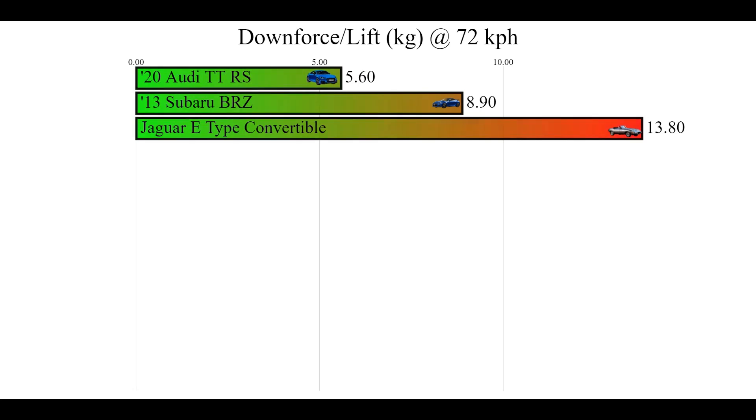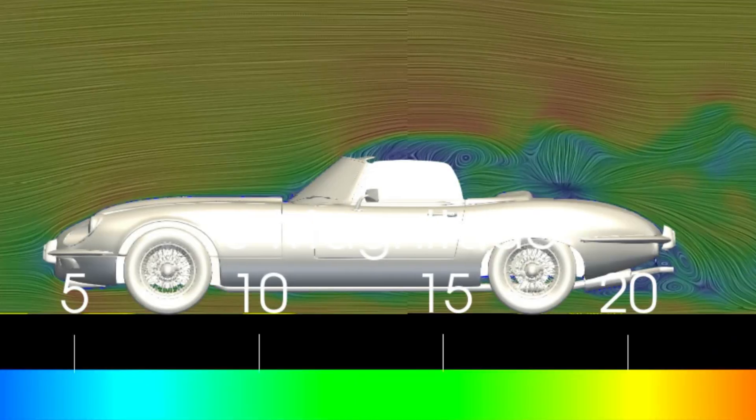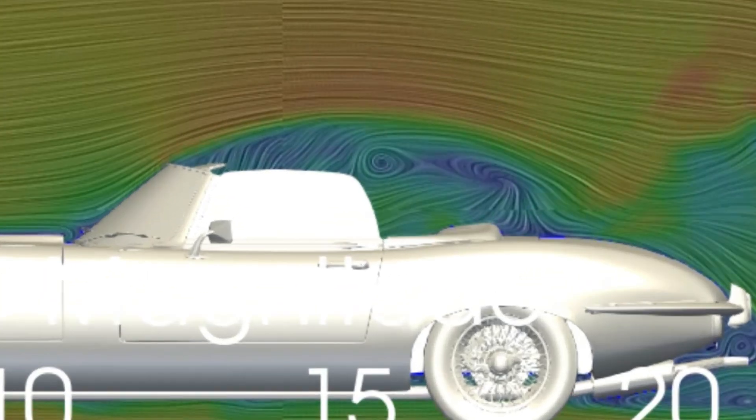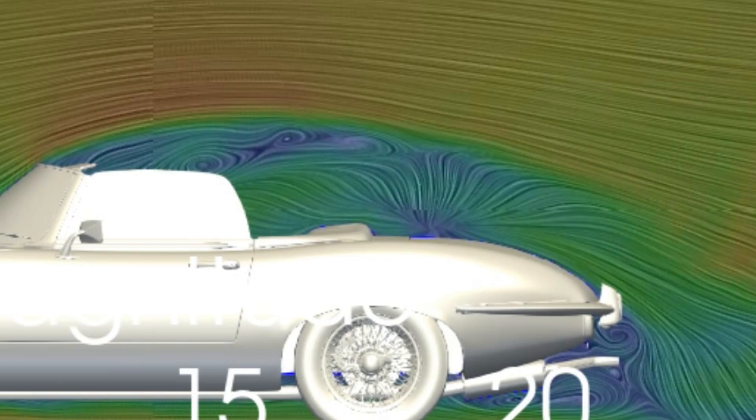Now that was for the windows down. What happens when you put the windows up? Let's find out. From this side view, there isn't too much of a difference. There is still a massive wake over the cabin, but perhaps there is a little less wake over the rear, just marginally. The rear diffuser is still pretty terrible too.